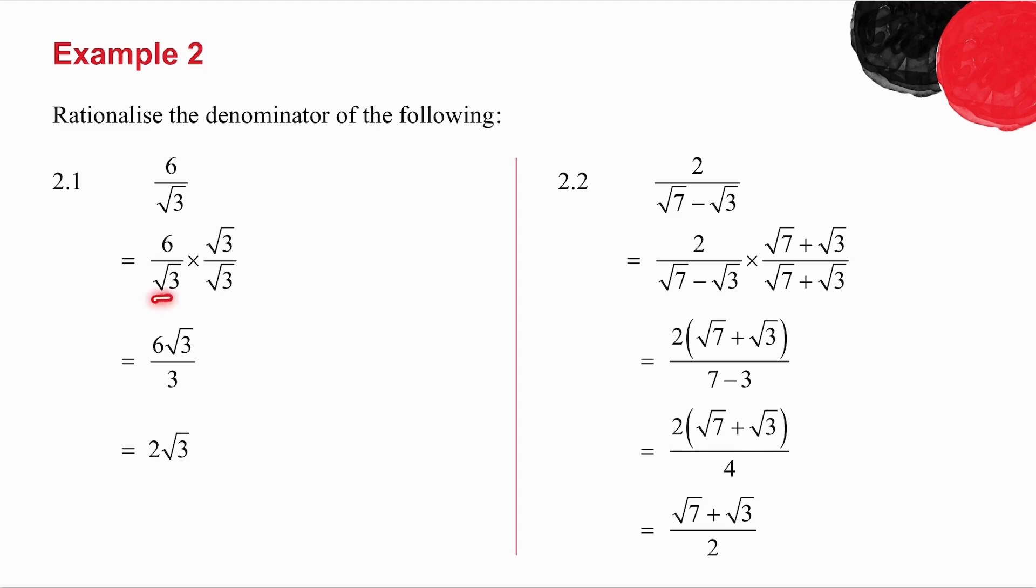In 2.1, I multiply the bottom of the fraction by root 3, which means I must multiply the top also by root 3. So I get 6 root 3 over 3, and 3 goes into 6 twice, and there the denominator of my fraction has become rational. In 2.2, I multiply by the conjugate, so by the same thing, but with the opposite sign. And I multiply the top by the same, so that's what I get on the top. The bottom becomes 7 minus 3, which is 4. And 2 goes into 4 twice.